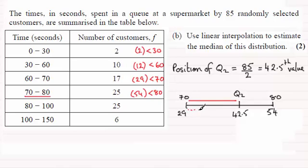I'll just do that dotted. That's from 29 to 42.5, and it should be in exactly the same ratio or same proportion as this width from 70 to 80 compared with the width from 29 to 54.